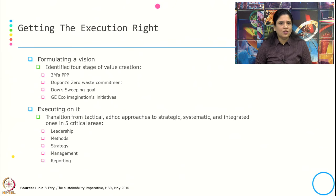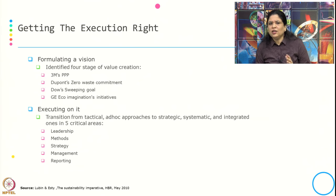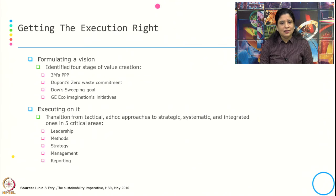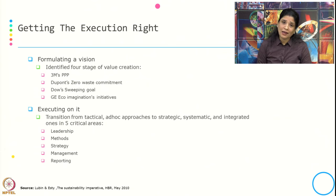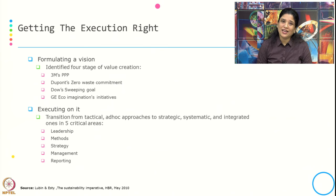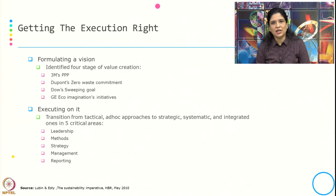Once you formulate the vision and identify the stage of value creation, the next challenge is how to execute on it. For execution, there has to be a transition from a tactical ad hoc approach to a strategic, systematic, and integrated one. Five critical areas need to be addressed in this transition — leadership, methods, strategy, management, and reporting.